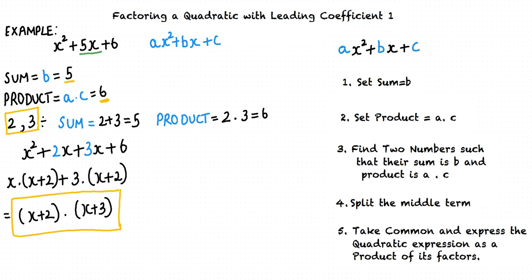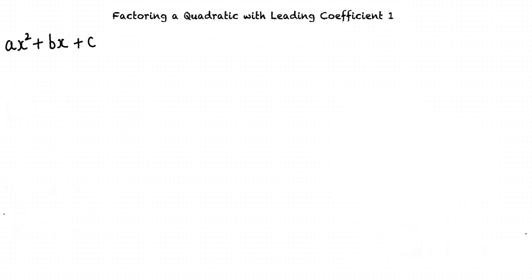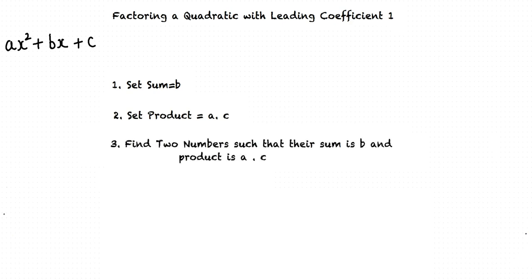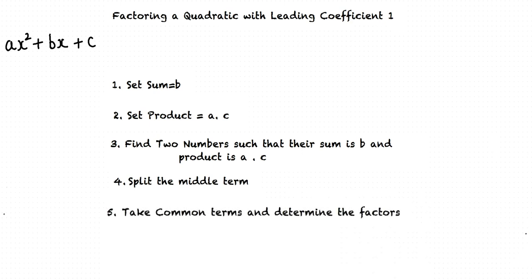Thus, we have completed factoring the quadratic expression. To summarize: in order to factor a quadratic expression of the form ax squared plus bx plus c with a equals 1, we first set sum equals b, then set product equal to a times c. We determine two numbers such that their sum equals b and their product equals a times c. We then split the middle term and write it as a sum of the two numbers, and finally take out common terms to determine the factors.